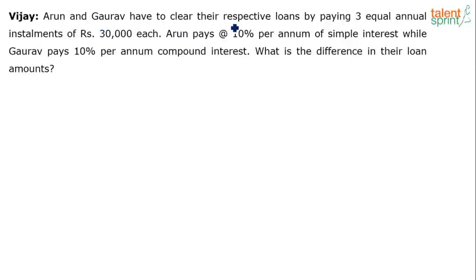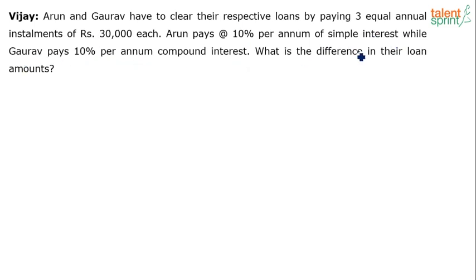Arun and Gaurav have to clear their respective loans by paying three equal annual installments of rupees 30,000 each. Arun pays at 10% per annum simple interest while Gaurav pays at 10% per annum compound interest. What is the difference in their loan amounts?